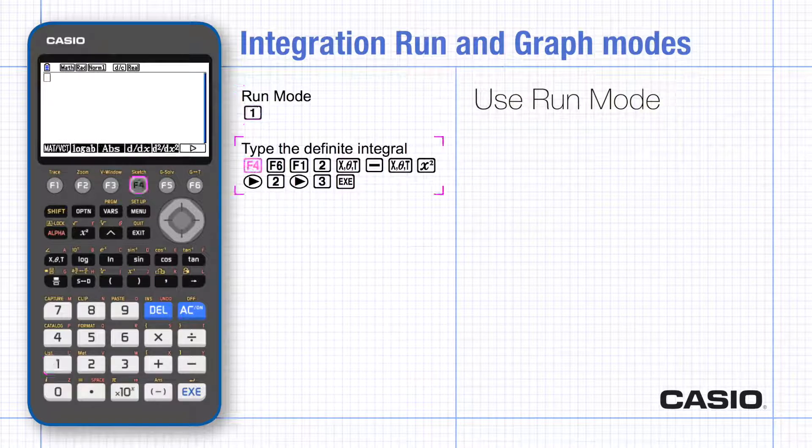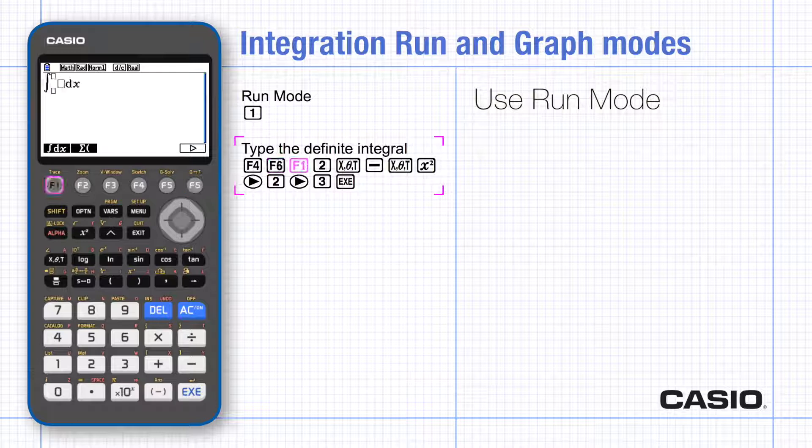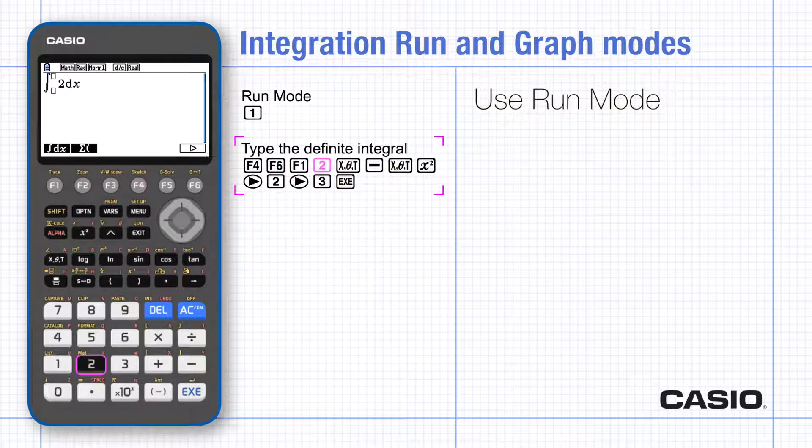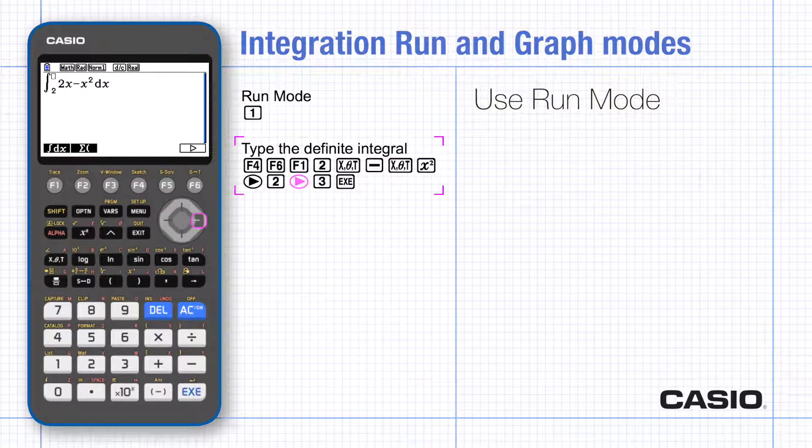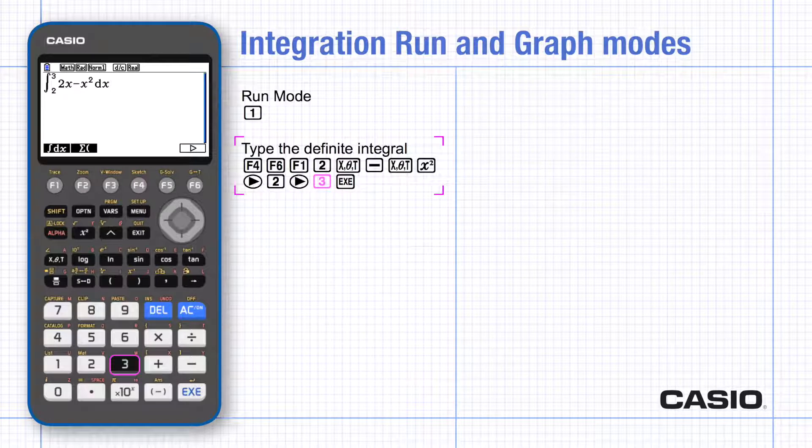In run mode use the math menu on the second page for the integral. Type the function and scroll to the right to type the limits. Execute and a fractional answer is given here.